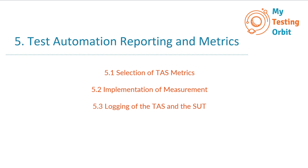Next is 5.3 Logging of the TAS and the SUT, where you will discover the importance of comprehensive logging in both the TAS and the SUT. And finally 5.4 Test Automation Reporting, where you will explore how to create informative reports that turn data into actionable insights for your automation efforts. So let's start with section 5.1 Selection of TAS Metrics and discover how to choose the right metrics to guide your test automation journey.